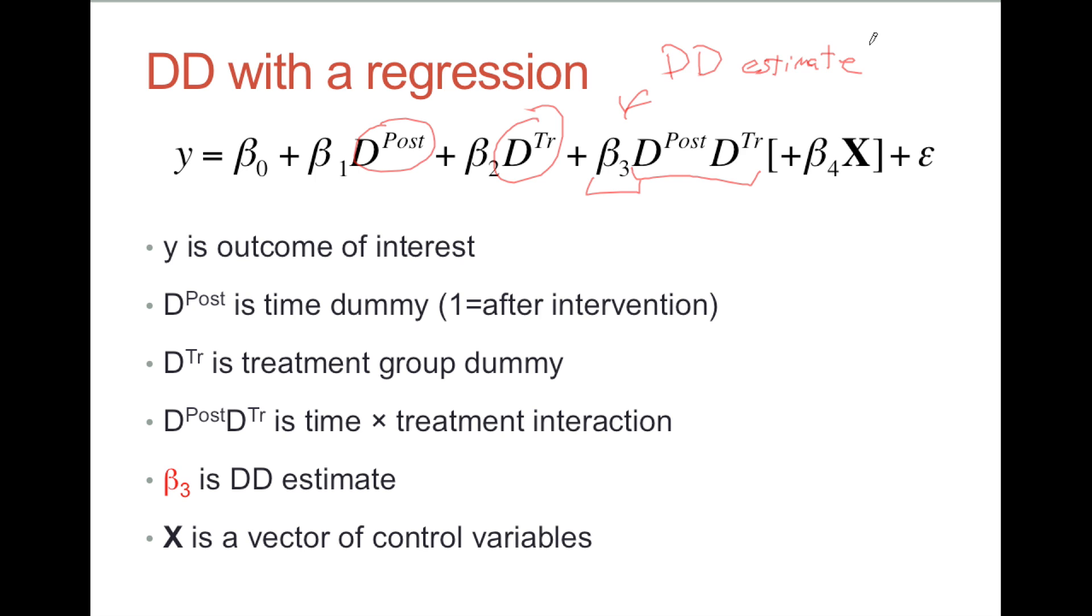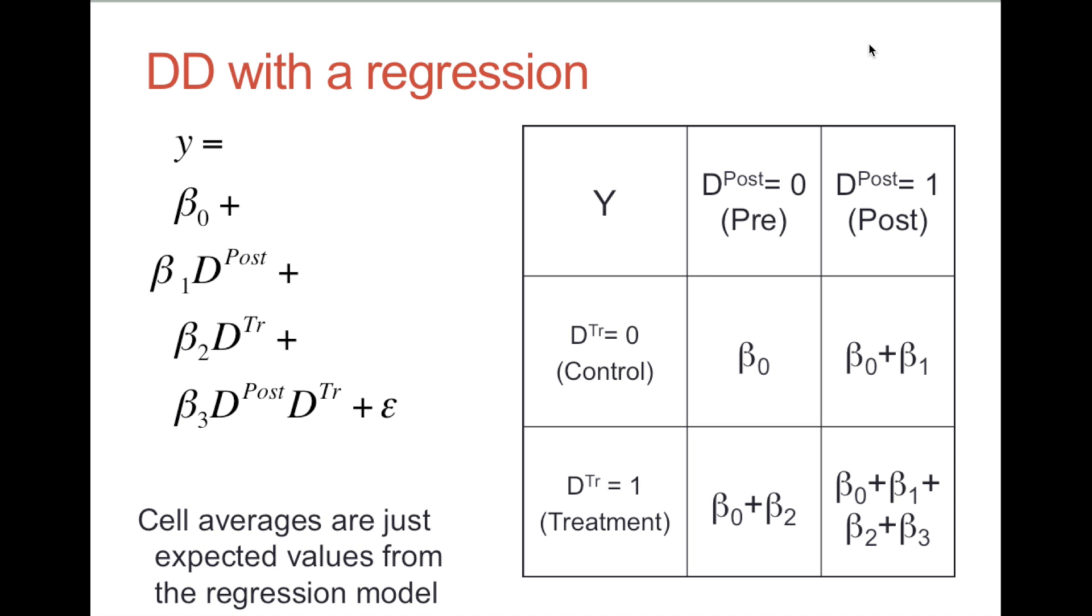So why does this work? When we run the regression, we're saying we believe test scores are determined by this regression model. If we take the conditional expected value of Y, like the expected value of Y given all of our independent variables, we get this linear combination and the error term drops out. So we can plug in these different values, say the post dummy variable equal to zero and the treatment dummy variable equal to zero. When we plug in those values, we get these population means shown in the table.